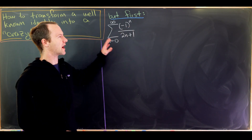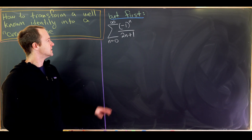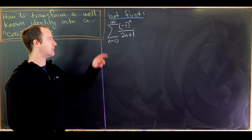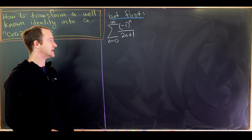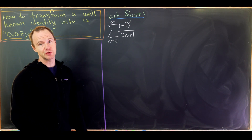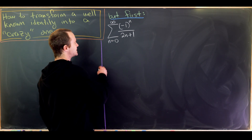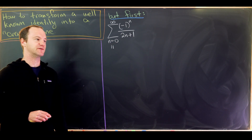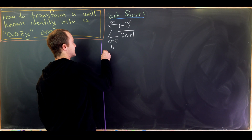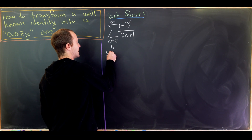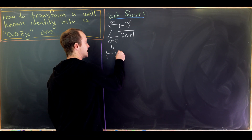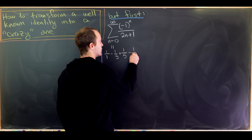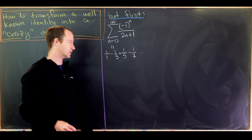So let's start with our well-known identity. We're going to look at the sum as n goes from zero to infinity of (-1)^n over (2n+1). This is simply the sum of the reciprocals of the odd numbers: 1/1 minus 1/3 plus 1/5 minus 1/7, and so on and so forth.